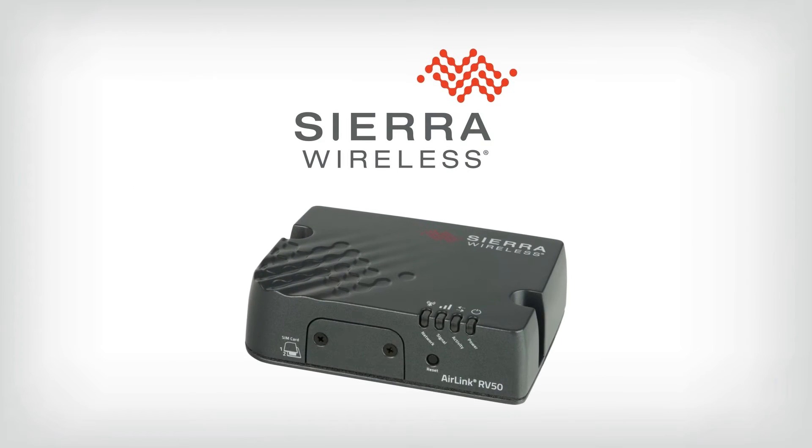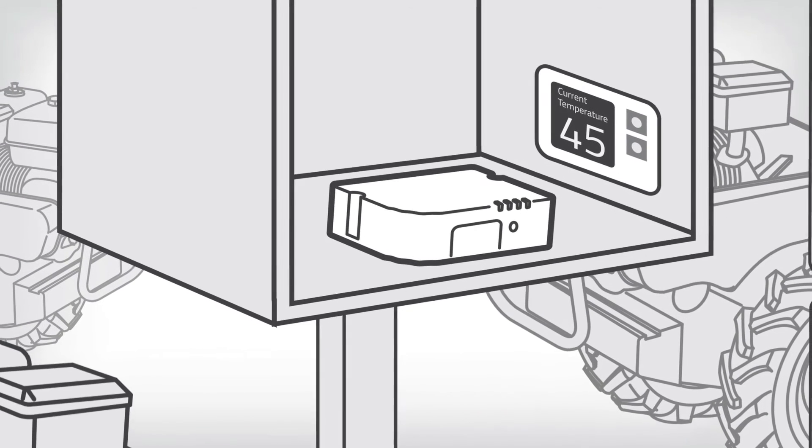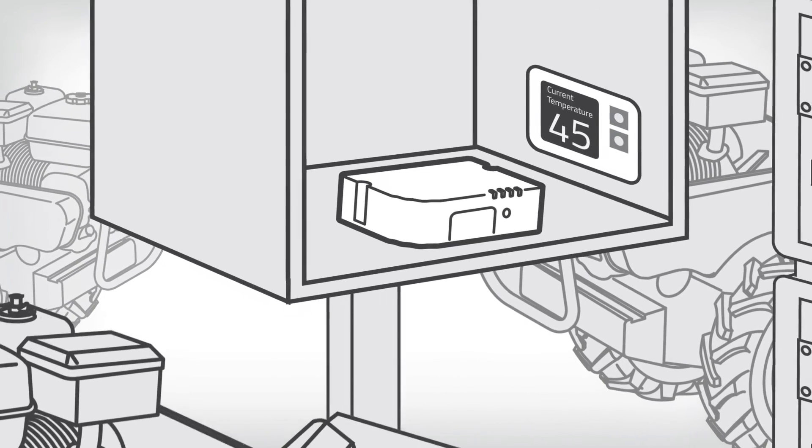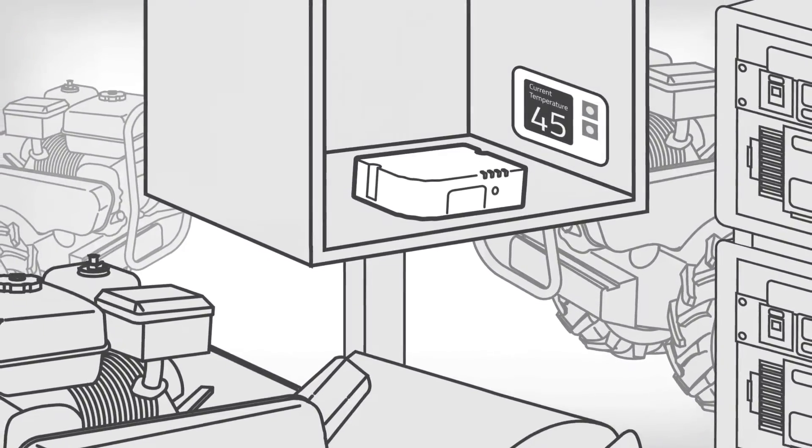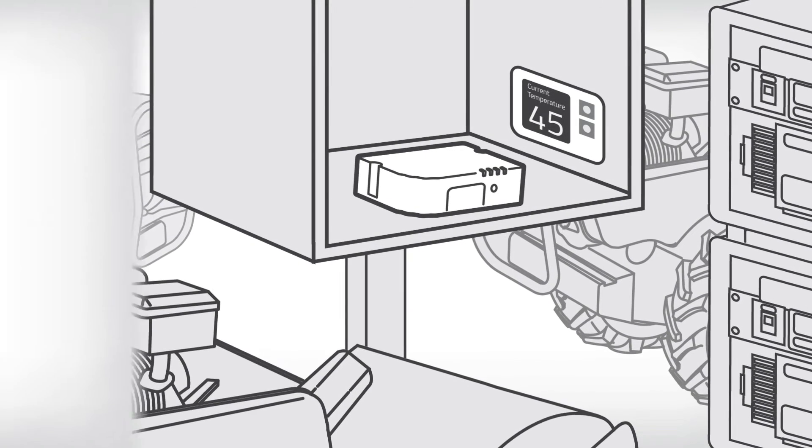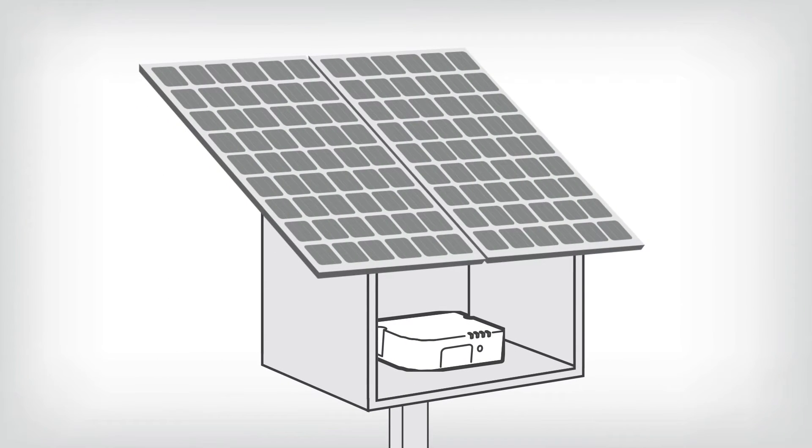Introducing the AirLink Raven RV50 Industrial LTE Gateway. From the market leader in cellular gateways, Sierra Wireless, the Raven RV50 is industrial-grade, specifically designed for operations in challenging and hazardous environments. It is easy to install and is optimized for solar applications.